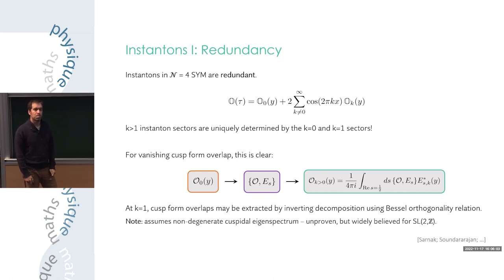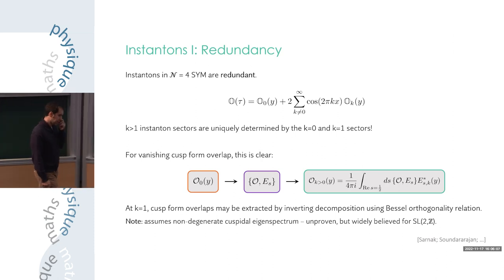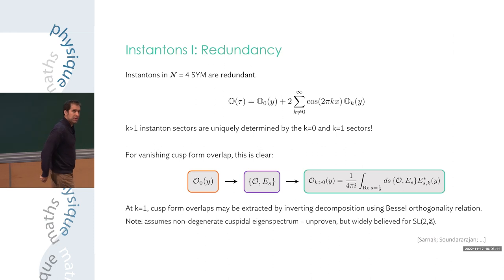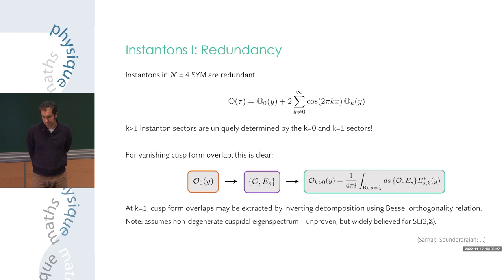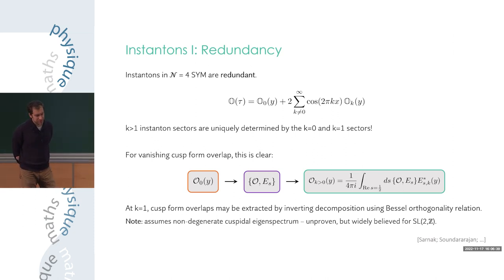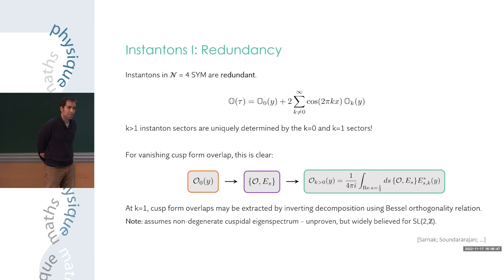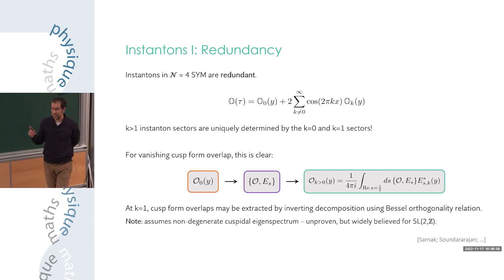It must be emphasized that this last property assumes the cuspidal eigenspectrum of SL(2,Z) is non-degenerate — widely believed to be true but not proven. The best known bound is logarithmically growing in the spectral parameter, which is very large compared to the anticipated bound of 1. With this standard assumption, the redundancy property holds. At large N in the 't Hooft limit instantons become non-perturbatively small, so this redundancy property is mainly relevant at fixed g_YM.